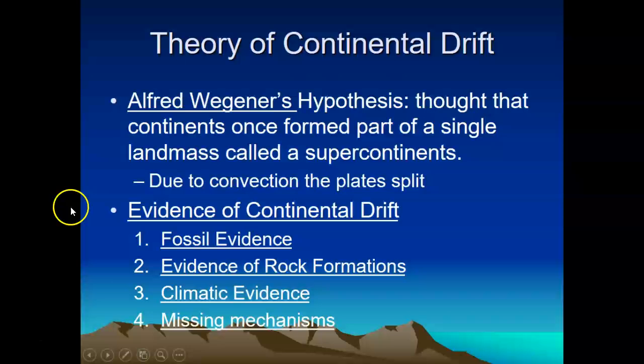A gentleman named Alfred Wegener came up with this hypothesis. He thought that continents once formed a single landmass, which we call a supercontinent, Pangea. And over time, they started to break up and drift apart. We are going to talk about what pieces of evidence we can use to help support the idea of continental drift and how the continents are actually moving.